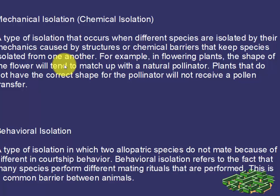The next is mechanical isolation, also called chemical isolation. This type of isolation occurs when different species are isolated by their mechanics — caused by structural or chemical barriers that keep species apart. For example, in flowering plants the shape of the flower tends to match up with a natural pollinator. Plants that do not have the correct shape for a pollinator will not receive a pollen transfer.